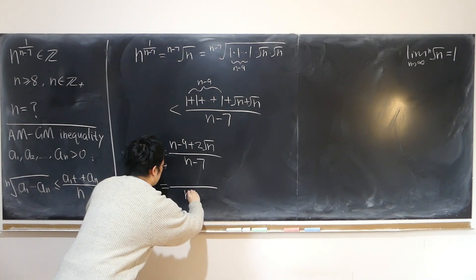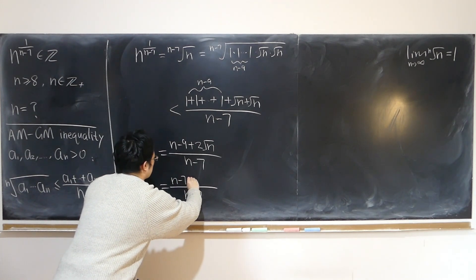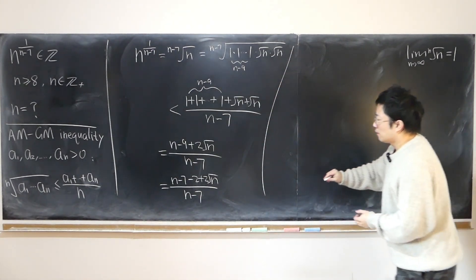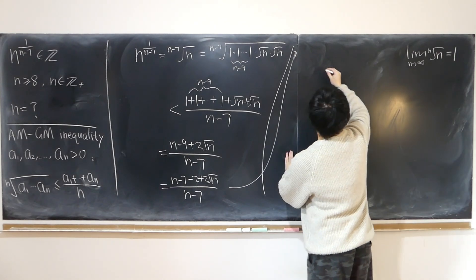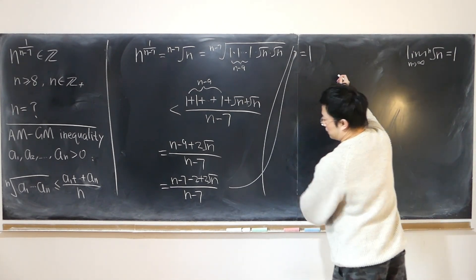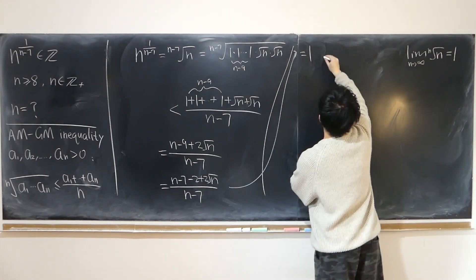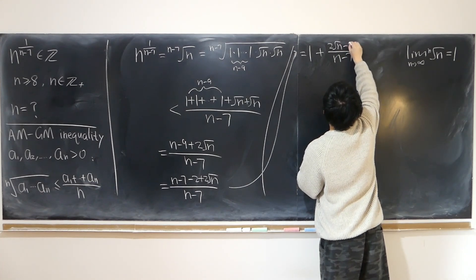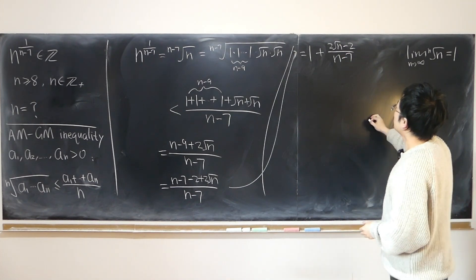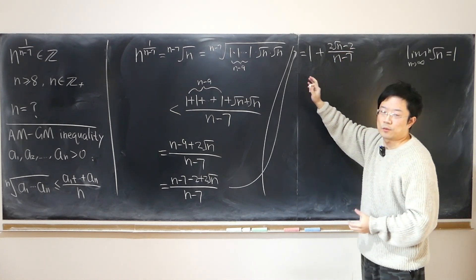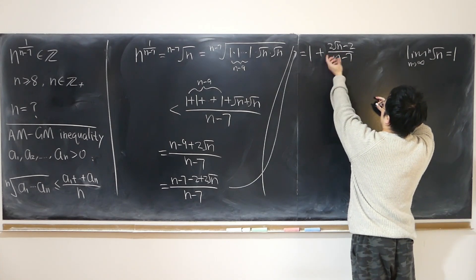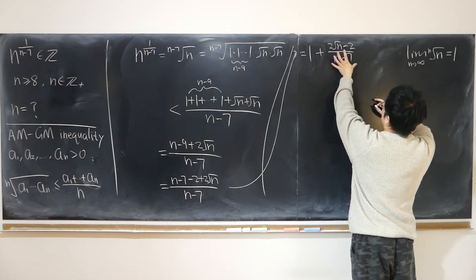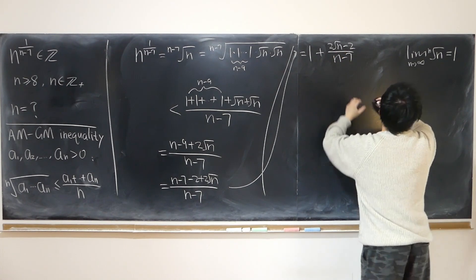So this is (n minus 7) minus 2 plus 2 square root of n, further: 1 plus (2 square root of n minus 2) over (n minus 7). From a calculus point of view, this part is 1, and the fractional part is approaching 0 because square root of n is much smaller than n. Just ignore the 7 and 2 — the whole thing obviously approaches 0 as n approaches infinity, which is the standard result from calculus.